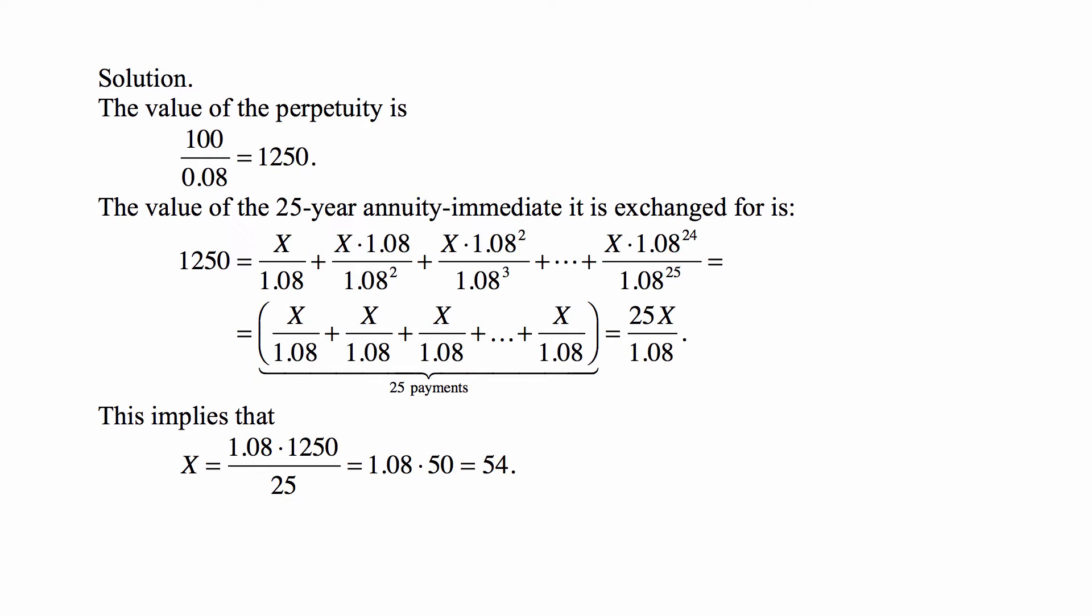Since the interest rate is 8% annual effective and we have a perpetuity immediate paying 100 at the end of each year, the value of such a perpetuity is 100/0.08. A unit perpetuity immediate is worth 1/i, where i is the annual effective interest rate. Since this one pays 100, the value is 100/i, where i is 0.08. So that's 1,250.